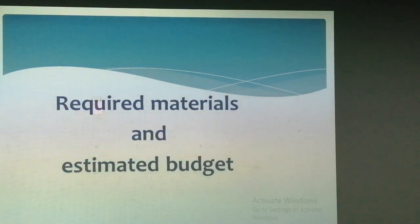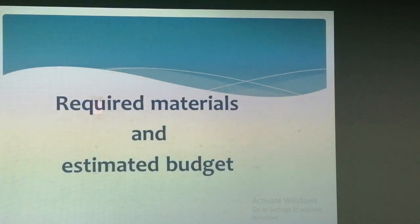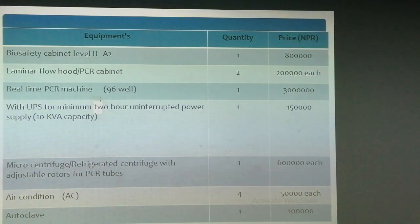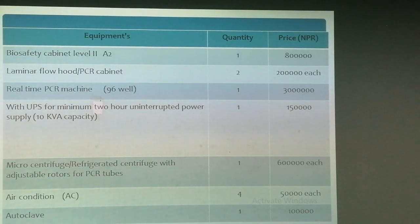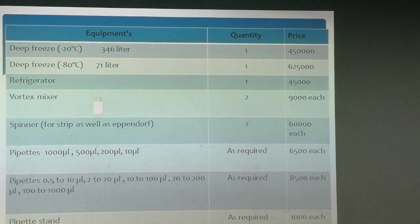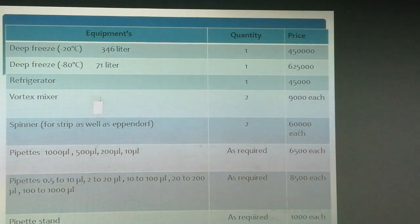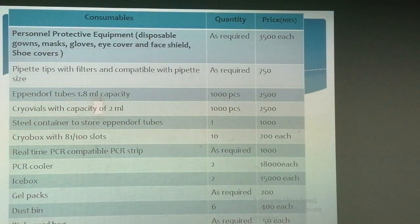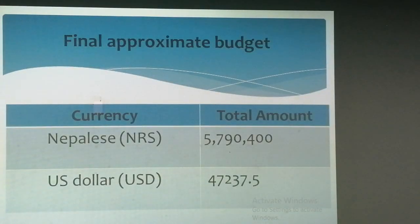These are the required materials for the setup of a molecular lab with budget — including equipments and consumables. This is the final approximate budget, which can vary according to the quality and quantity of your instruments and test volume.